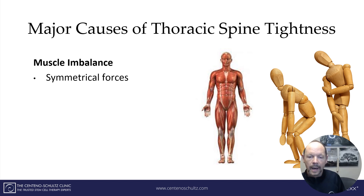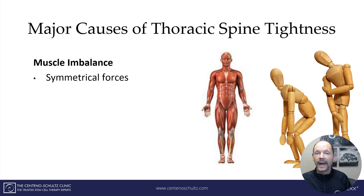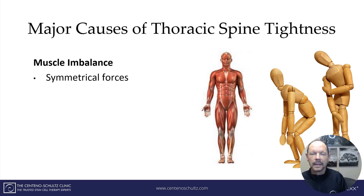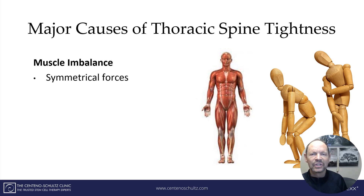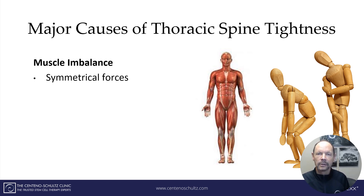Another cause is muscle imbalance. As depicted here, there's symmetry: when right equals left and the muscles engage in a symmetrical fashion, we have upright posture and neutral spine alignment. It's when we have muscle imbalance that we start having problems with posture and function, and it can certainly be a significant cause of thoracic spine tightness. An occupational physical therapist and a chiropractor can be incredibly helpful in identifying and treating muscle imbalance.